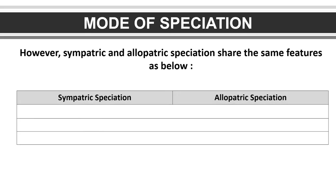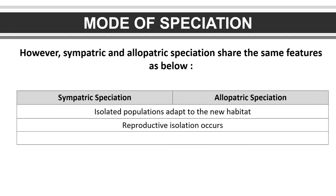However, sympatric and allopatric speciation share the same features. In both speciation types, the isolated populations adapt to the new habitat. Secondly, reproductive isolation occurs in both speciation. And lastly, gene flow is prevented in both sympatric and allopatric speciation.